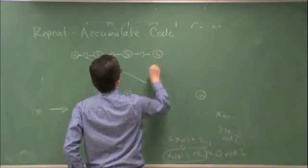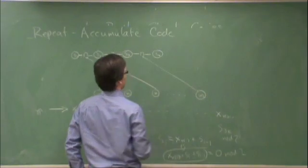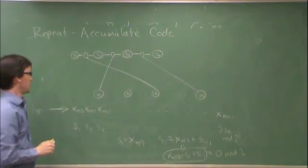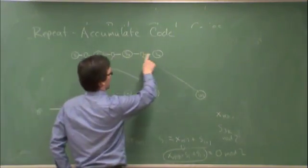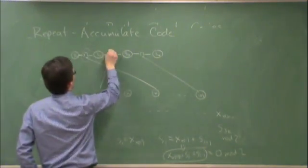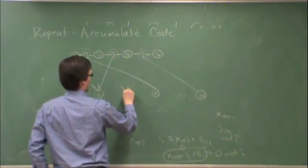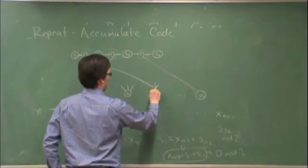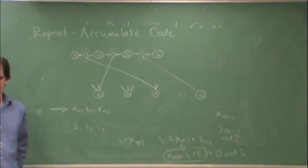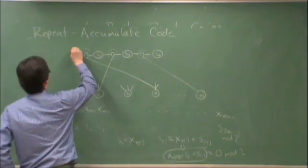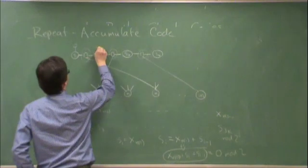So, in the end, what we will have is a factor graph with this kind of structure across the top, with these parity checks. Each of these w's at the bottom will have exactly r edges outgoing, and the observations will be on the s's.